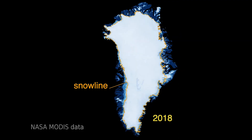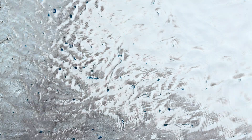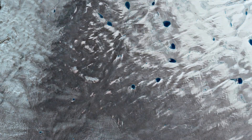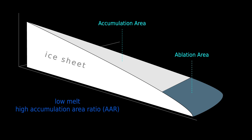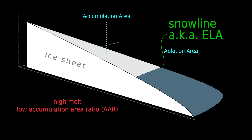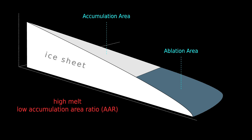From satellite imagery, our study mapped the snow line across Greenland in 20 different years. In a high melt year like this one, the snow line is pushed higher up the ice sheet by melting, and so the area accumulating mass from snow is less.